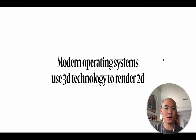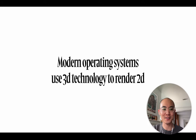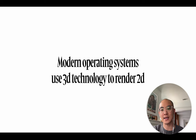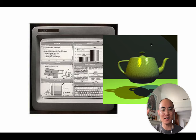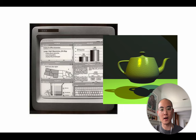Even though your Mac UI or your Windows UI is mostly 2D — websites are mostly 2D interfaces — the technology they use underneath is actually capable of doing 3D. And really, a lot of the same ideas are implemented for the primitives that are actually used to draw the graphics, even though the output looks totally different, like a totally different dimension.